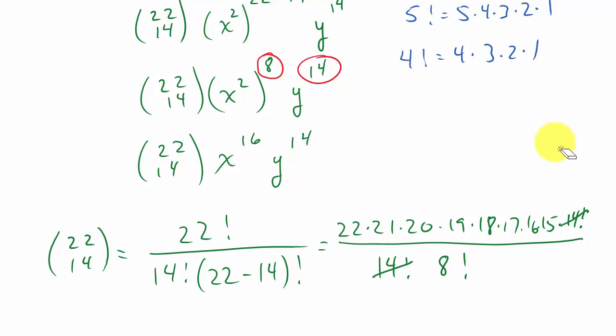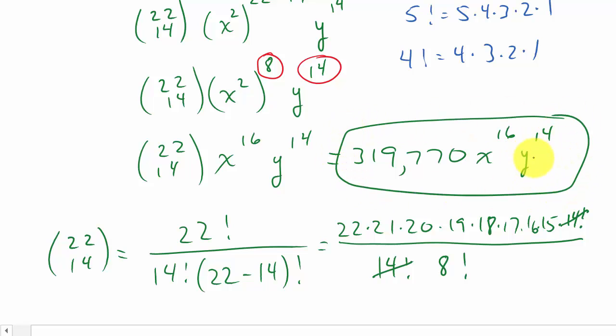So I'm just going to go ahead and punch this into the calculator. So I'm typing in 22 and now I'm hitting my PRB button. And then I scroll over to NCR, hit enter. And then I type in 14 and hit enter. And I get 319,770. That's what this is. And then that's x to the 16th times y to the 14th. And this would be the term containing y to the 14th.